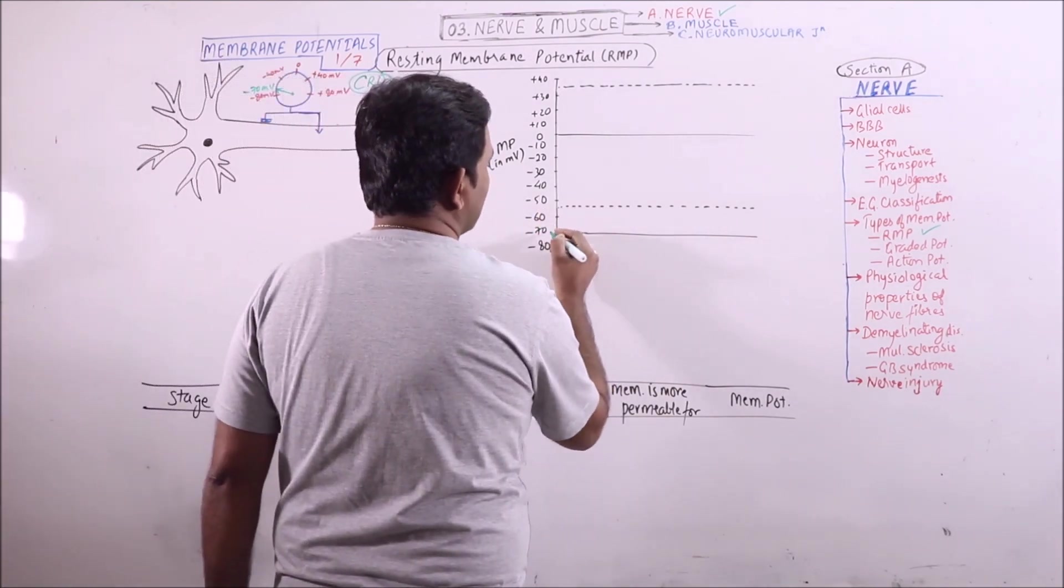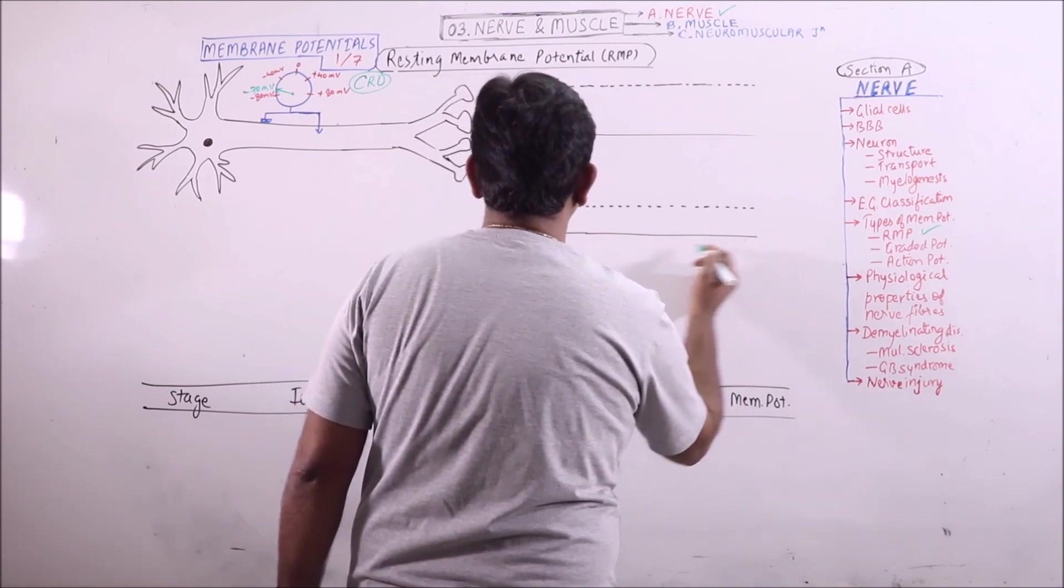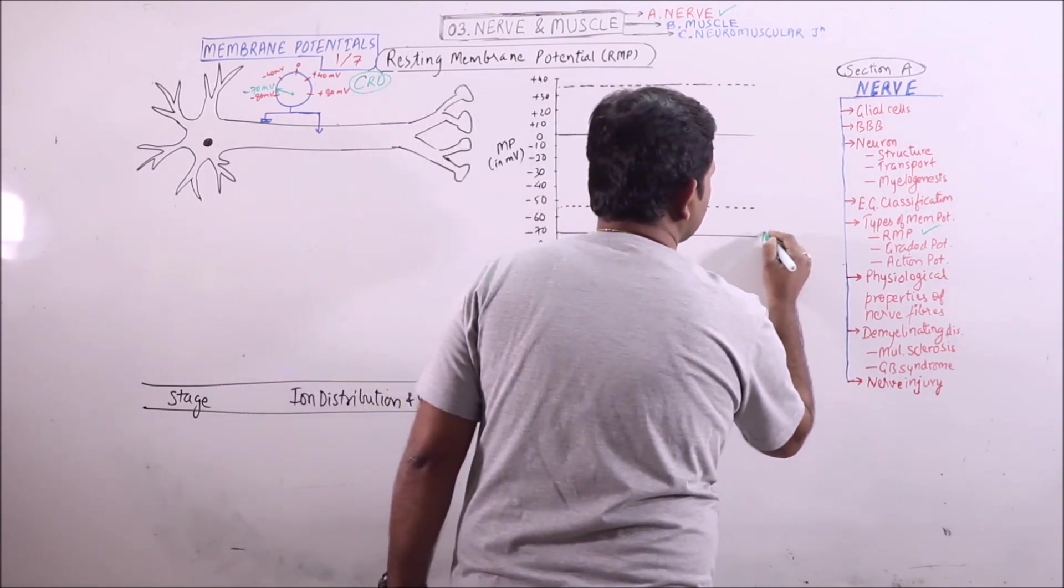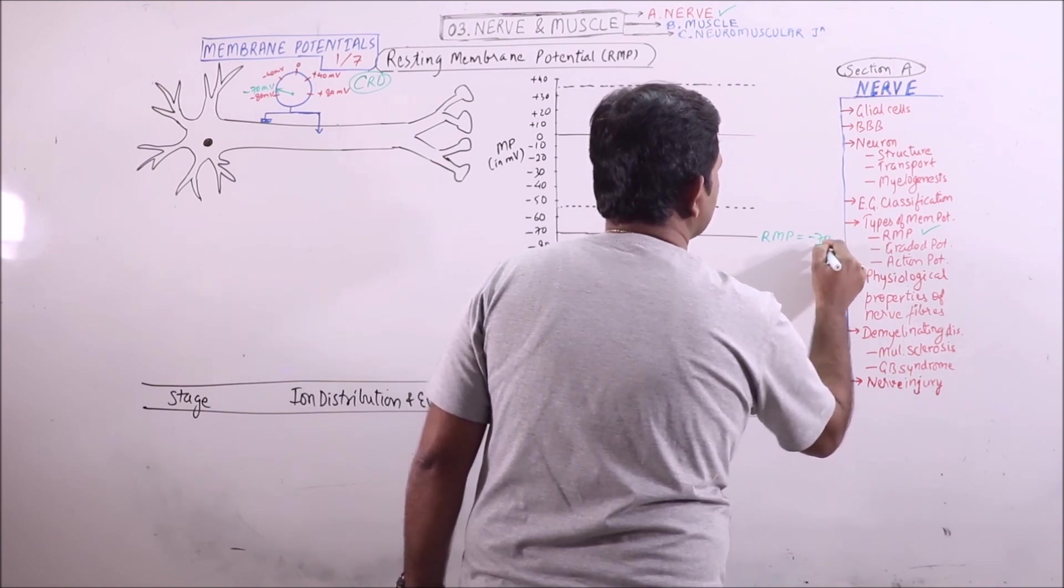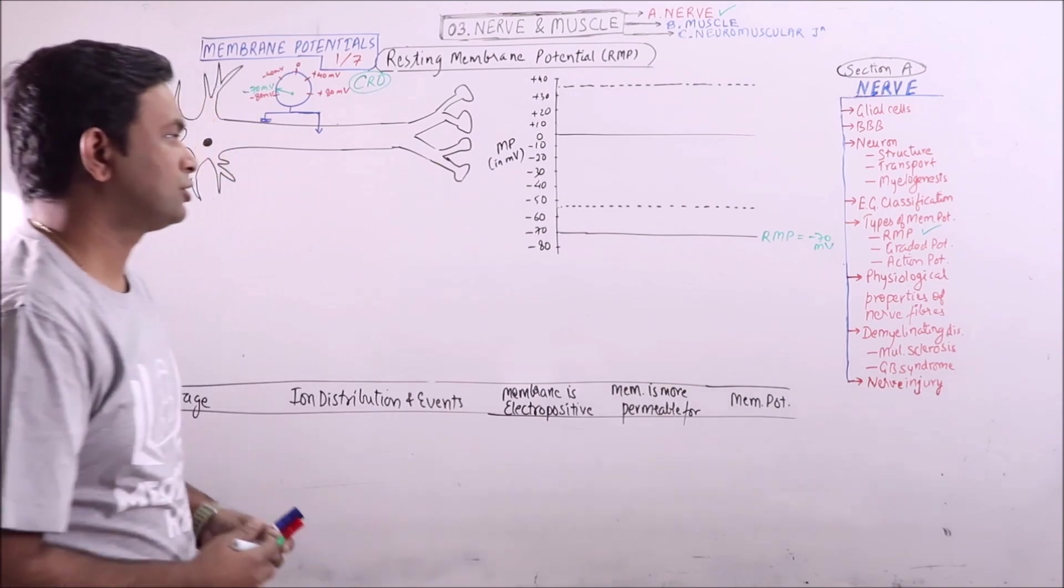In this graph, we can see that this is minus 70, this is resting membrane potential. That is minus 70 millivolts.